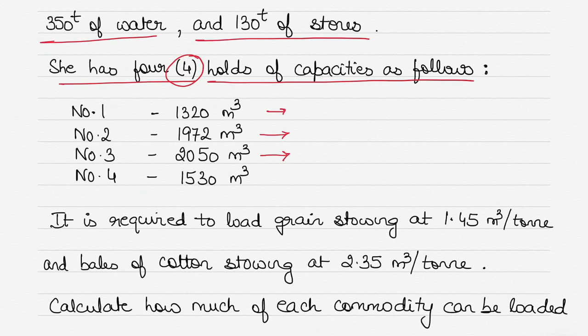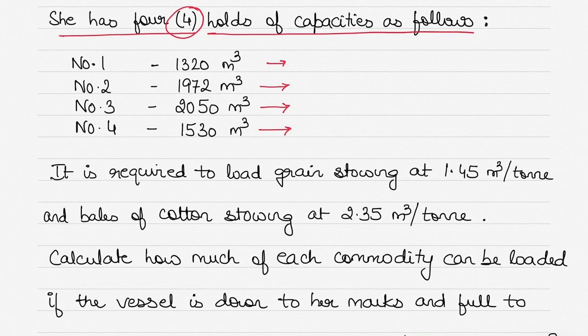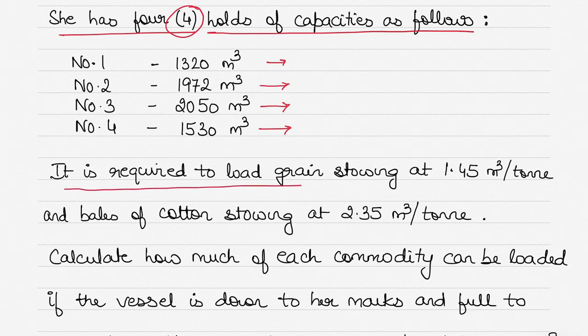You are required to load grain cargo stowing at 1.45 cubic meters per ton, that's the stowage factor, and then bales of cotton stowing at 2.35 cubic meters per ton.